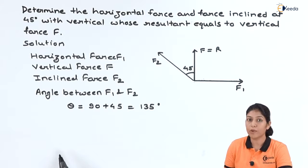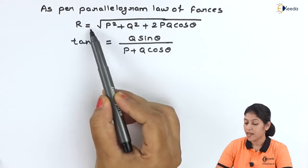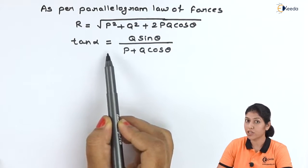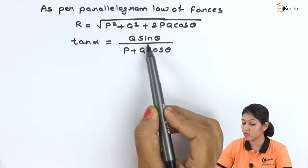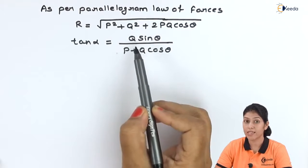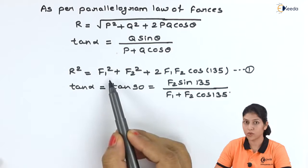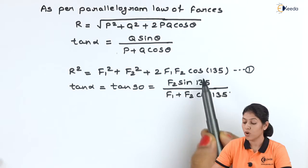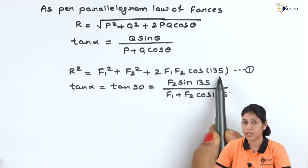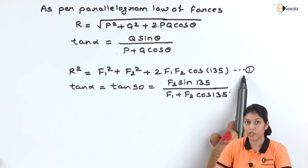Let us apply the concepts of the parallelogram law of forces. As per the parallelogram law, the equation of resultant is R equals the square root of P squared plus Q squared plus 2PQ cos θ, and the angle of inclination of the resultant with the horizontal surface is tan α equals Q sin θ divided by P plus Q cos θ. Here we are considering P as F1 and Q as F2, so our resultant equation becomes R² = F1² + F2² + 2·F1·F2·cos135°, and we take this as equation 1.